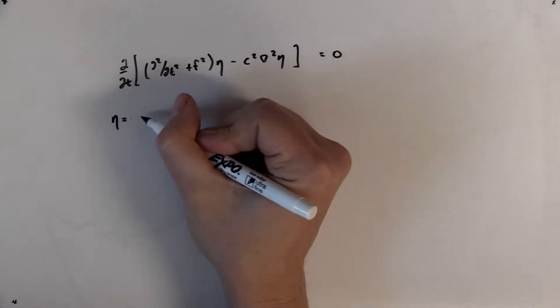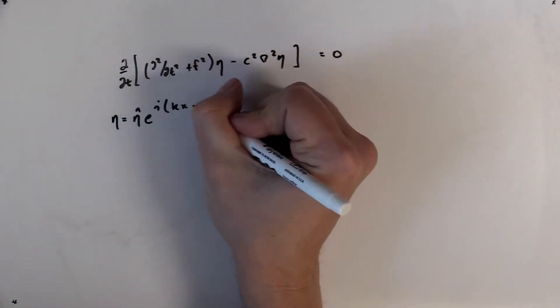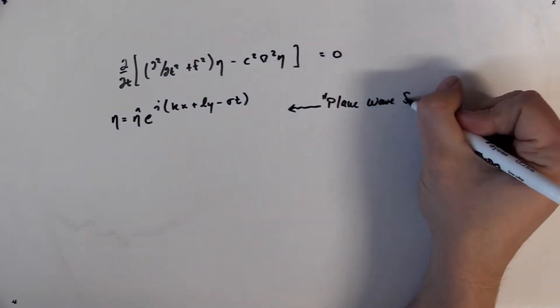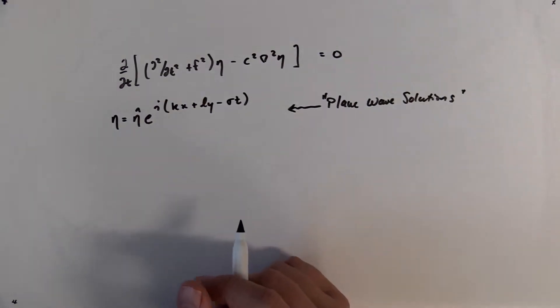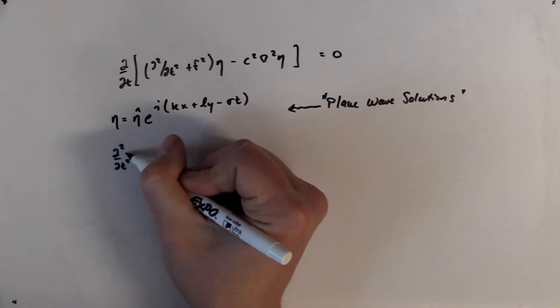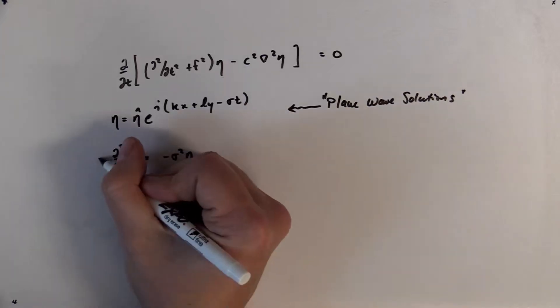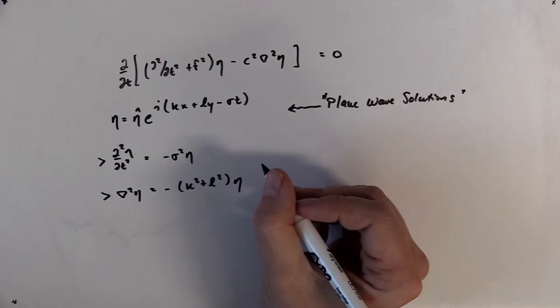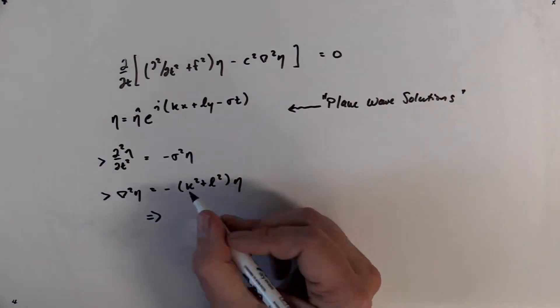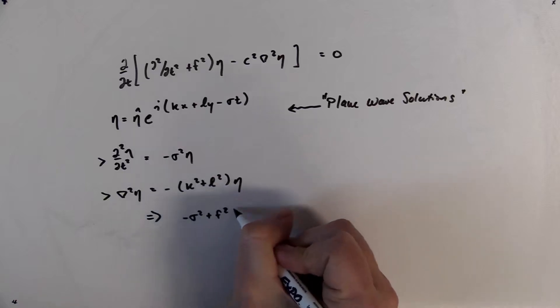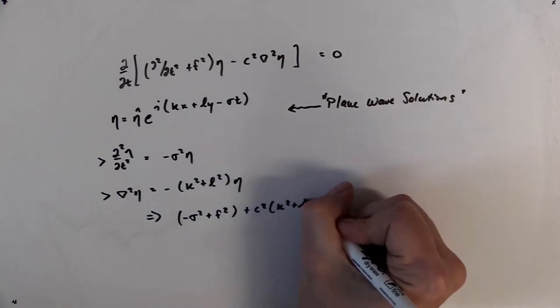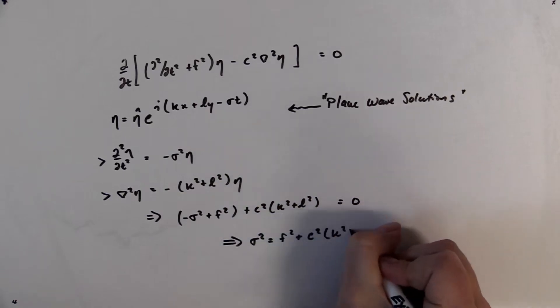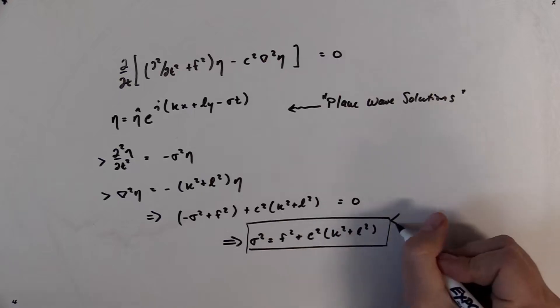We can plug in plane wave solutions for eta and derive what is called the dispersion relation. Plane wave solutions are complex exponentials, which allows us to turn differential operators into algebraic ones, which is quite convenient. Taking the second derivative of the free surface height with time just gives us minus sigma squared eta, where sigma is the wave frequency. Similarly, del squared eta just gives us negative of k squared plus l squared, where k and l are wave numbers in the x and y directions, respectively. Substituting these into the field equation for the free surface height gives us the dispersion relation for inertia gravity waves.